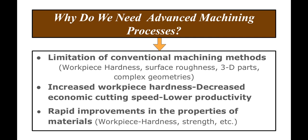In most cases, industry people use CNC machines — computer numerical control machines. Increased work piece hardness leads to a decrease in the economic cutting speed, because as hardness of the work piece increases, the cutting speed at which you can machine the part keeps decreasing. That means productivity goes down, leading to more expensive and time-consuming manufacturing.